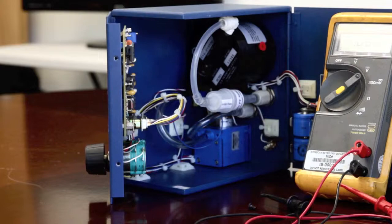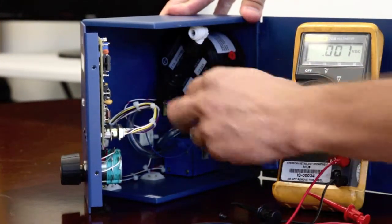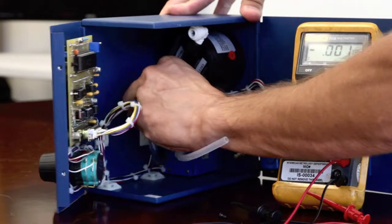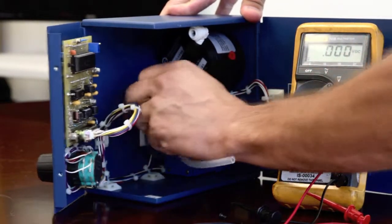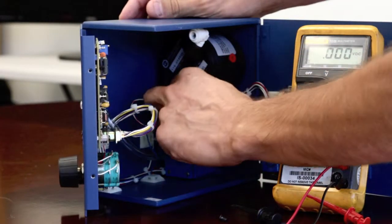Now, remove the sensor. Start by disconnecting the tubing first. Then, disconnect the lead wires.